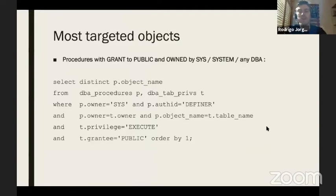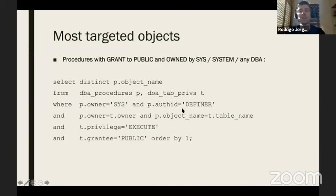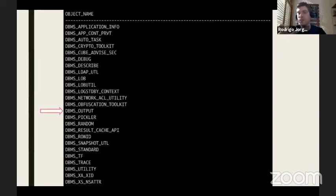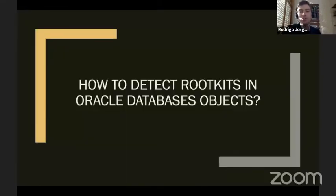The target objects for this kind of rootkit are mainly objects owned by SYS that execute with the privileges of the owner — so CREATE USER and GRANT DBA commands won't fail. Also, objects that have EXECUTE privilege granted to PUBLIC. We have a pretty extensive list of target objects. In this example I used DBMS_OUTPUT, but the attacker could also use DBMS_RANDOM — so that giving a specific seed triggers user creation and grants DBA.